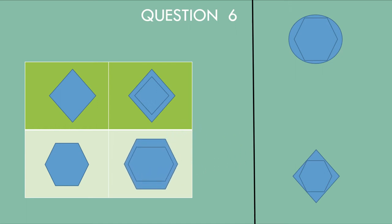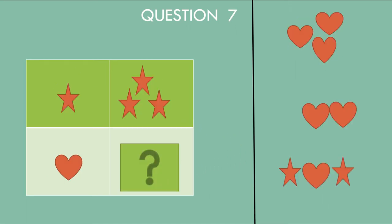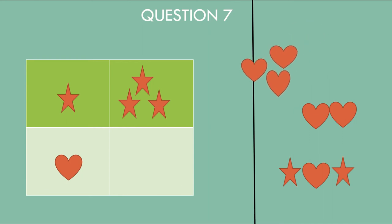Question number 7. How do you see the relationship? One star and then it is a group of three stars. Yes, a group of three stars — so that is the answer.